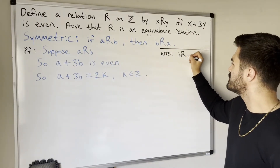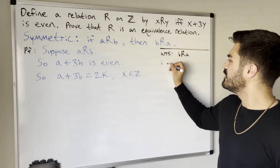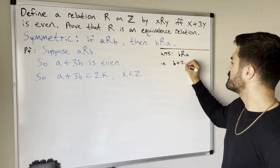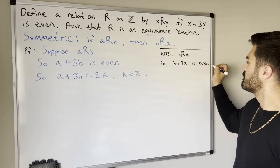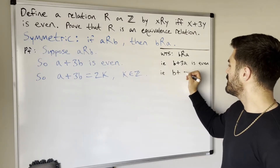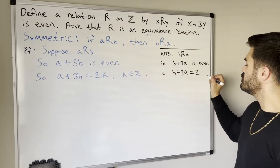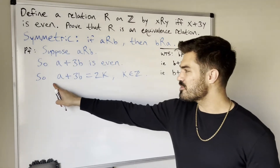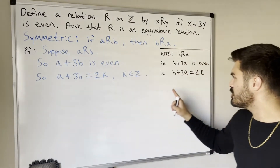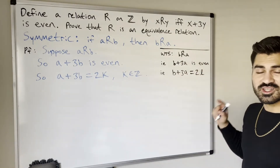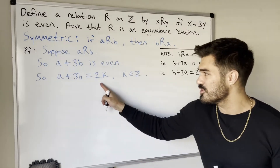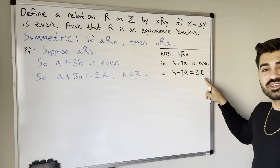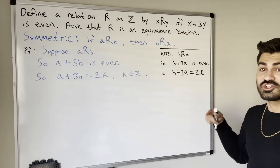We want to show b is related to a, which means we want to show b plus 3a is even — in other words that b plus 3a equals 2l for some integer l. We need to use the equation a plus 3b equals 2k to reach this. Pause and try it if you'd like — l just needs to be some integer.